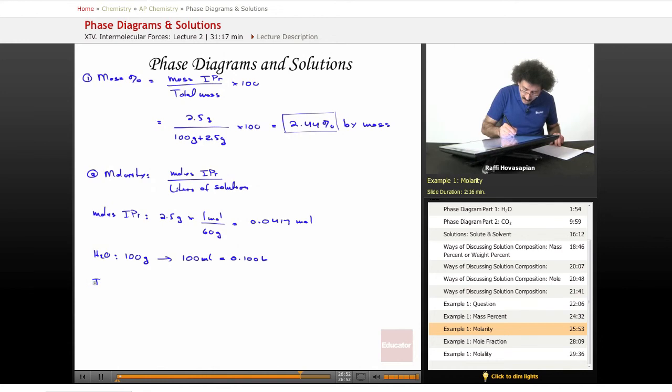Now isopropanol. Here we're doing volume. Isopropanol, we said we have 2.5 grams and we said that 1 milliliter of that is 0.786 grams.